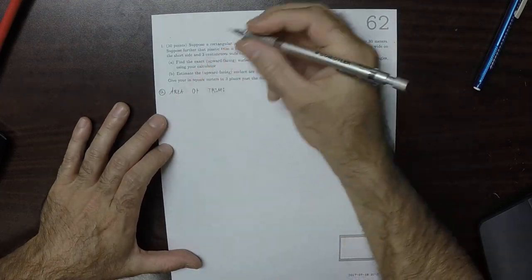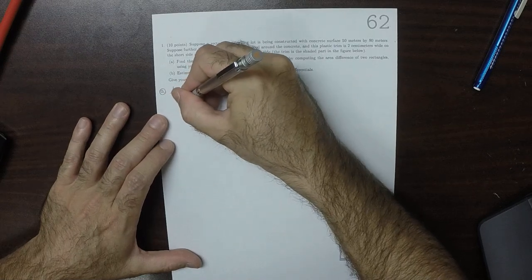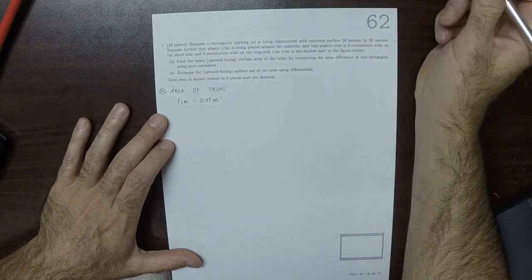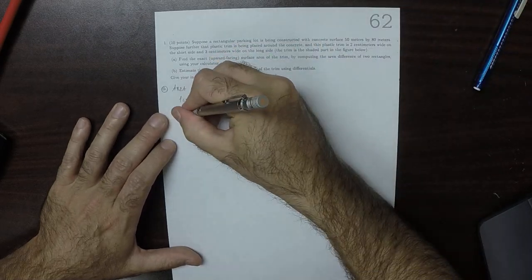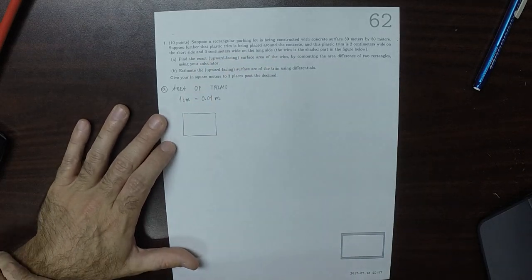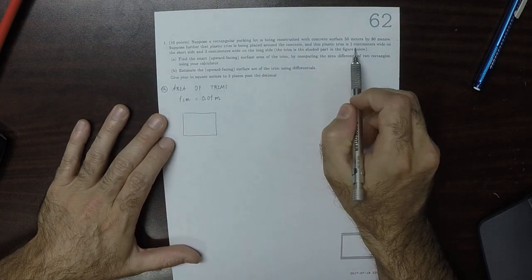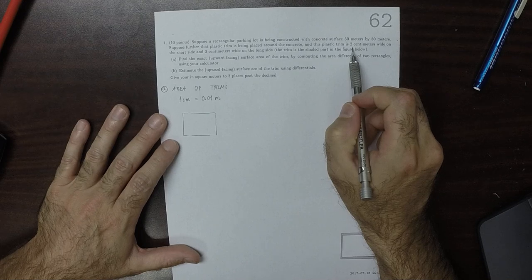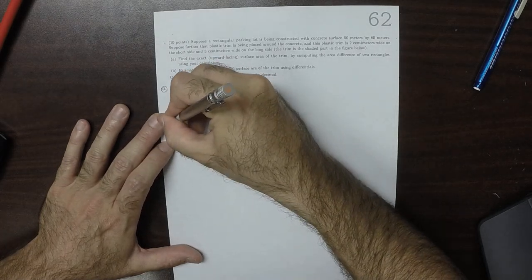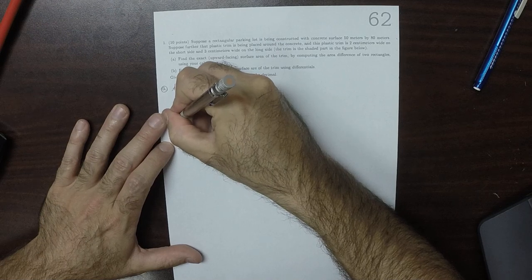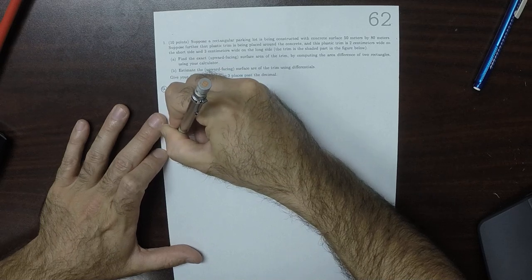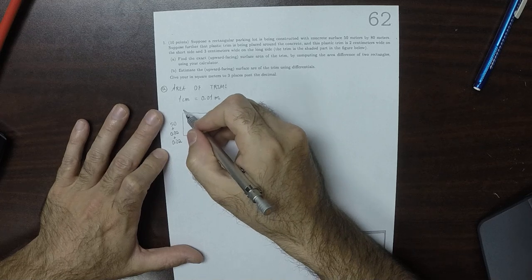So the larger rectangle, remember that one centimeter is 0.01 meters. Because it's saying that the plastic trim is 2 centimeters wide on the short side, that means that this is 50 plus 0.02 plus 0.02 because you have it on the top and on the bottom.